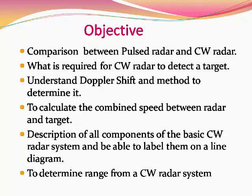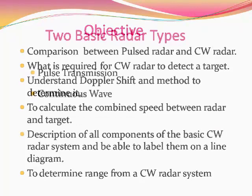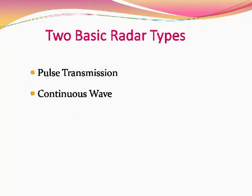Finally, let us see how we can determine the range of a target using a CW radar. While discussing all these things, we also come across the applications of CW radar and its modified form, which we are going to see as Frequency Modulated Continuous Wave radar or in short FMCW radar. So the crux of this is to understand the two basic types of radars.